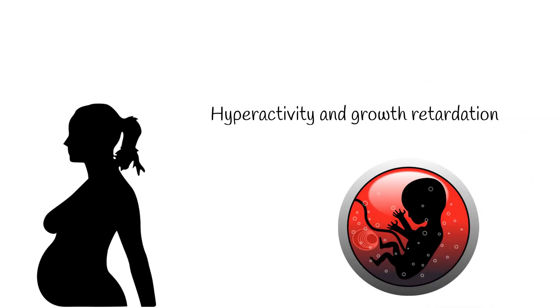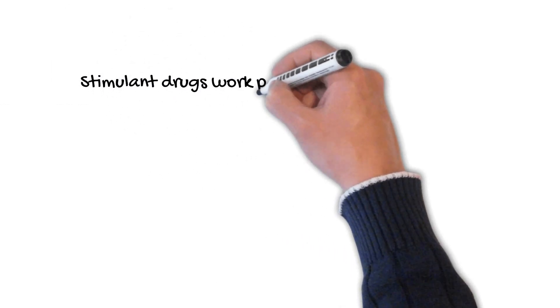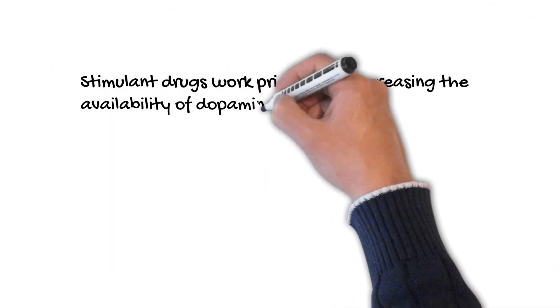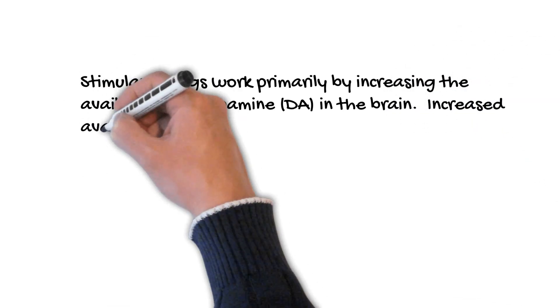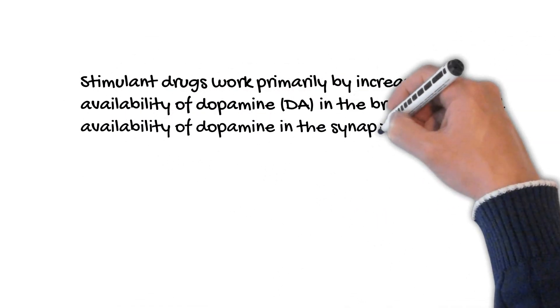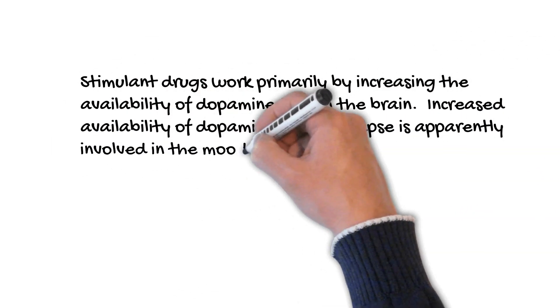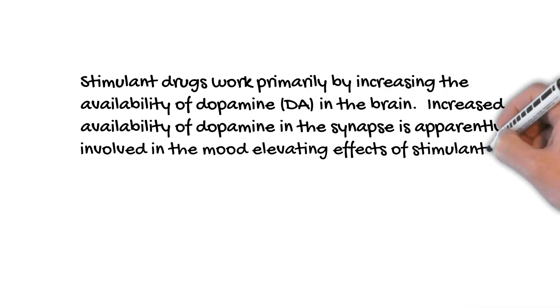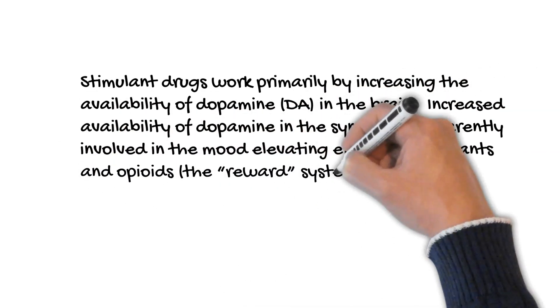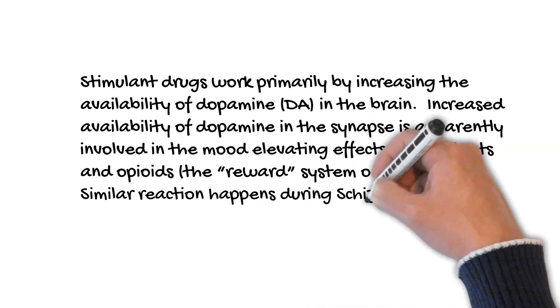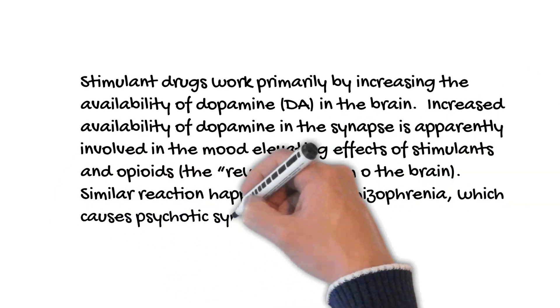Stimulant drugs work primarily by increasing the availability of dopamine (DA) in the brain. Increased availability of dopamine in the synapse is apparently involved in the mood-elevating effects of stimulants and opioids. The reward system of the brain. Similar reaction happens during schizophrenia, which causes psychotic symptoms.